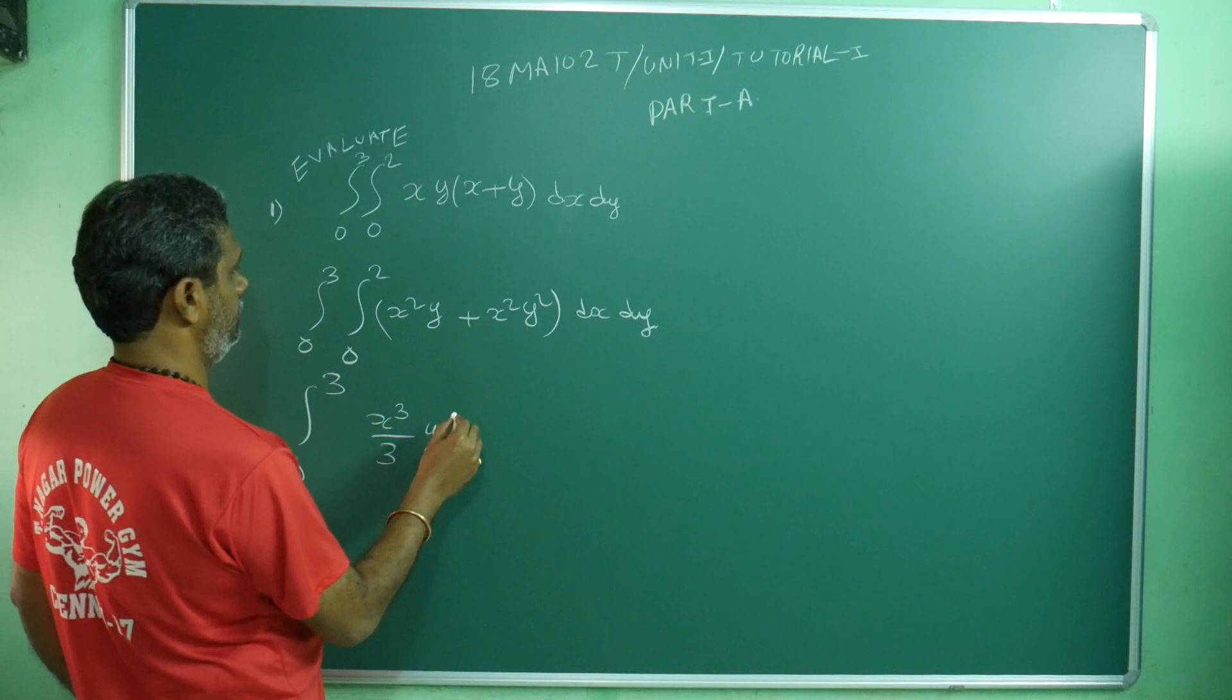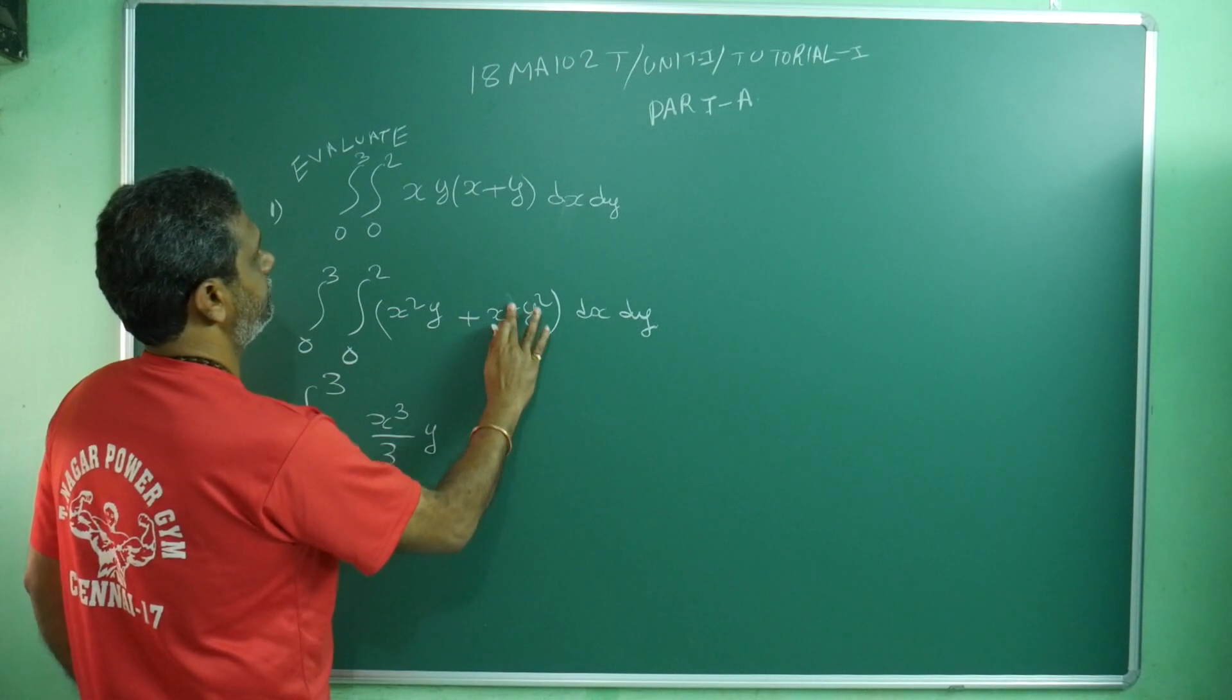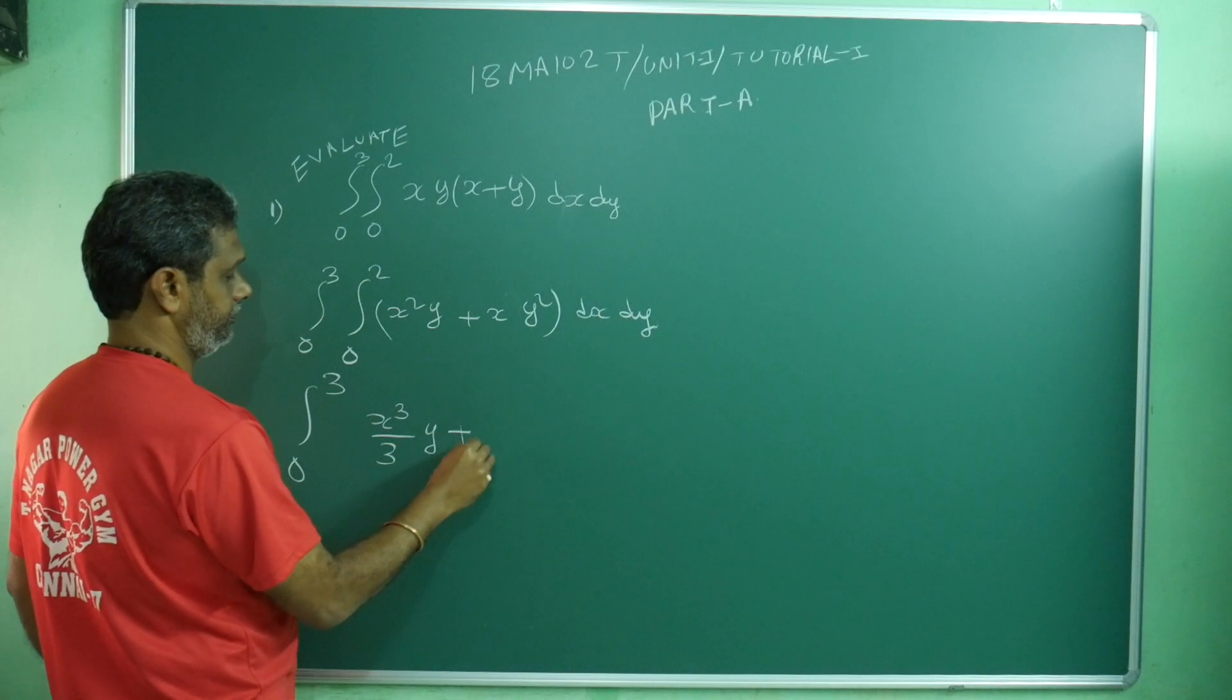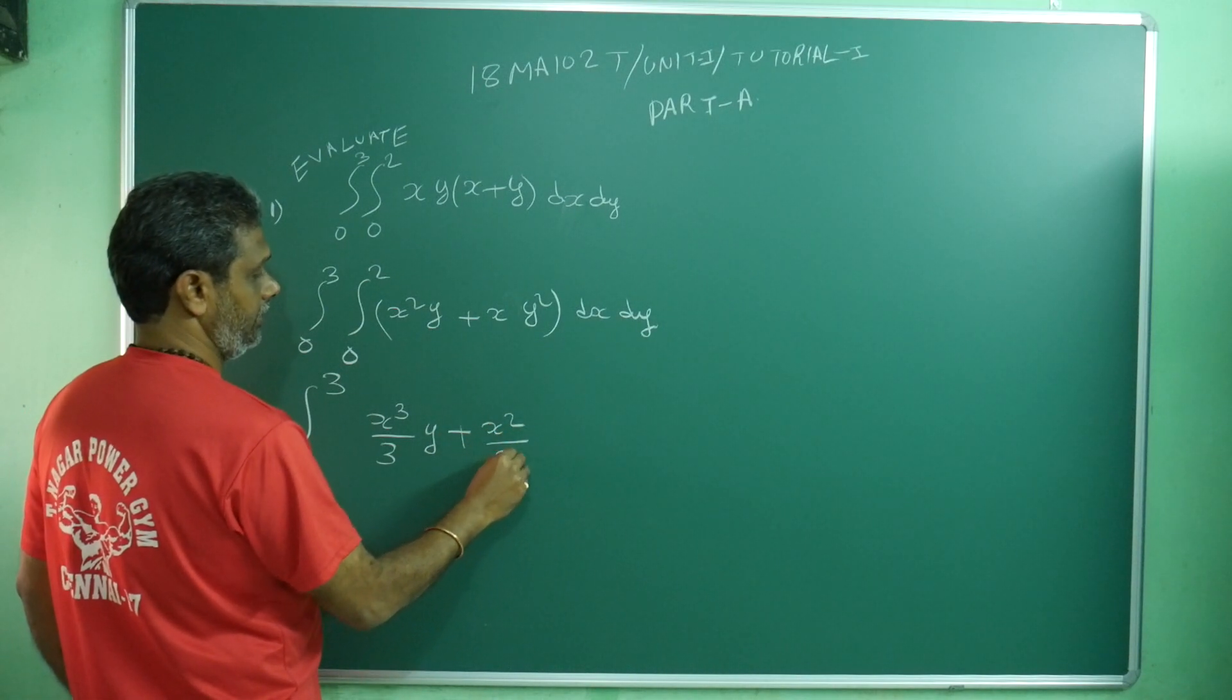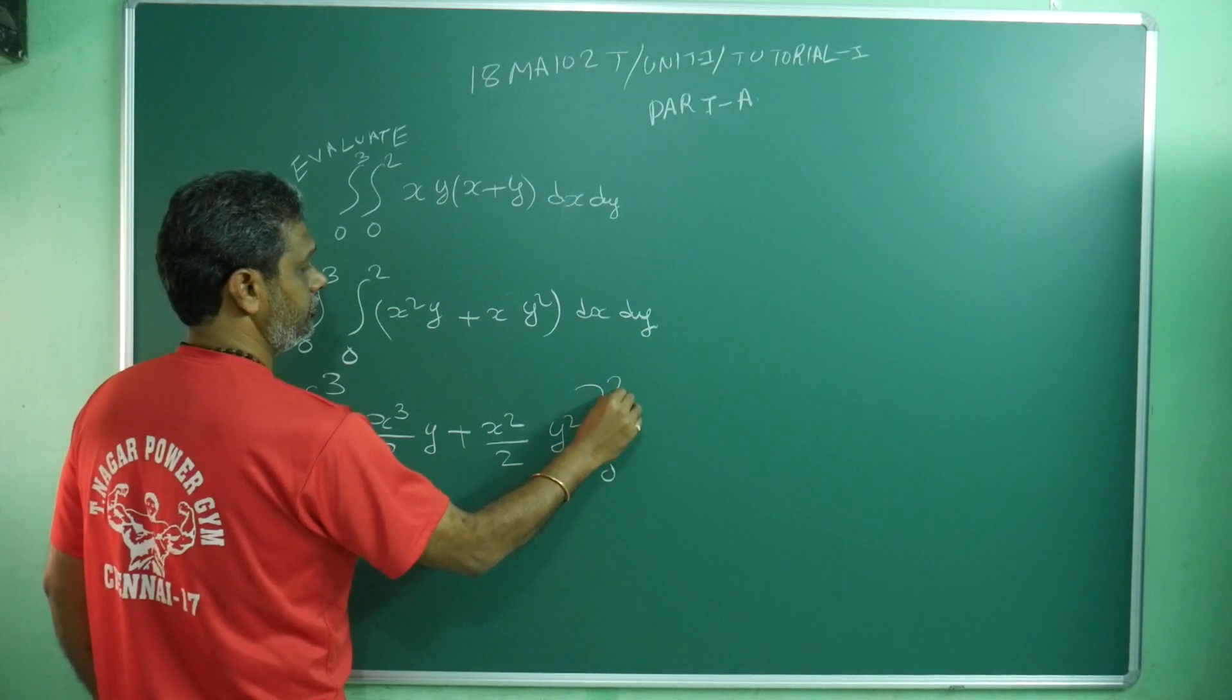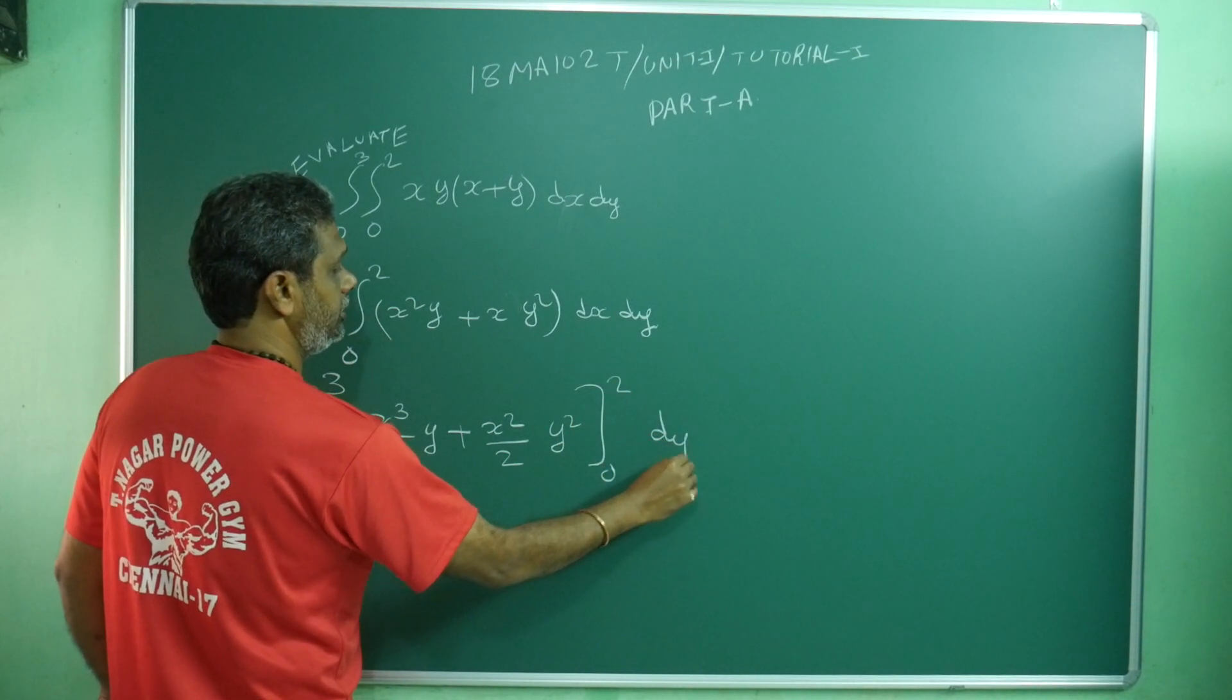This is x times y squared: x into y squared plus x squared by 2 times y squared, limits 0 to 2, and dy.